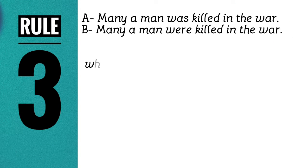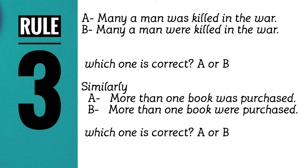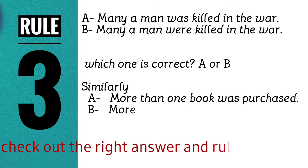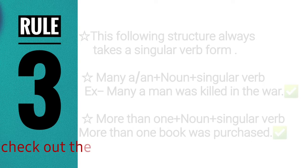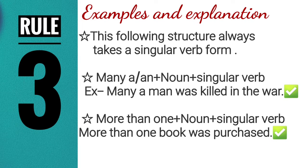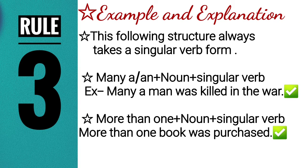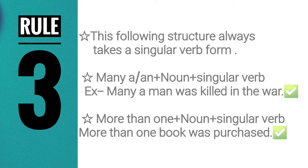The third rule: consider 'Many a man was killed in the war' vs. 'Many a man were killed in the war' — which is correct? Similarly, 'More than one book was purchased' or 'were purchased'? Though 'many a man' seems plural, the correct form is singular — 'was.' The structure 'many a + noun' and 'more than one + noun' always takes singular verb form.